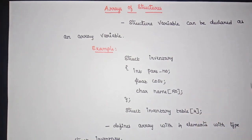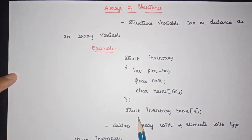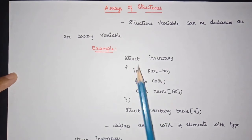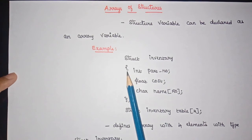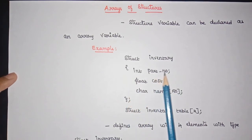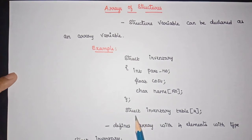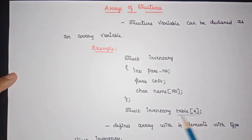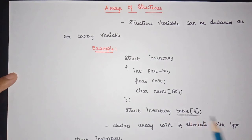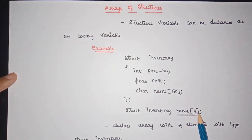When your structure variable is declared as an array variable, we call it an array of structures. Here is the structure we are using: the keyword struct to define it, inventory as the name, and inside this structure we have members like part number of integer type, cost of float type, and name of character type. The variable 'table' is the structure variable, declared here as an array type using a one-dimensional array.